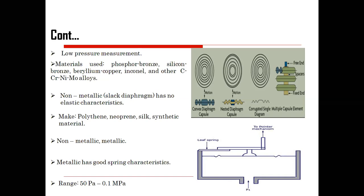Metallic diaphragms have good elastic characteristics that feasibly generate output in response to pressure input. Non-metallic materials like polythene, neoprene, silk, and synthetic materials have minimum elasticity and produce very low output. Metallic diaphragms with good spring characteristics measure pressure in the range of 50 Pascal to 0.1 megapascal.